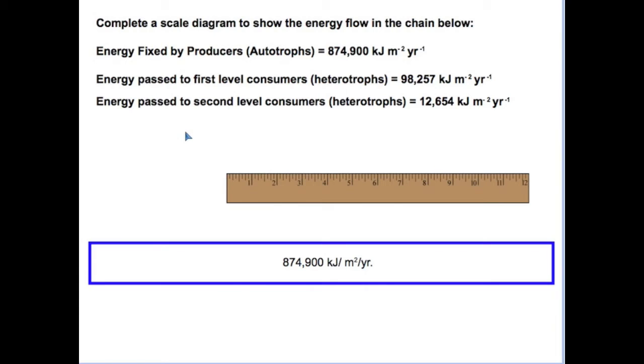But it is important to realize that the ten percent rule is simply a rule of thumb, and for many ecosystems the flow of energy and the efficiency of energy transfer from autotrophs to first level consumers and then to second level consumers varies significantly.